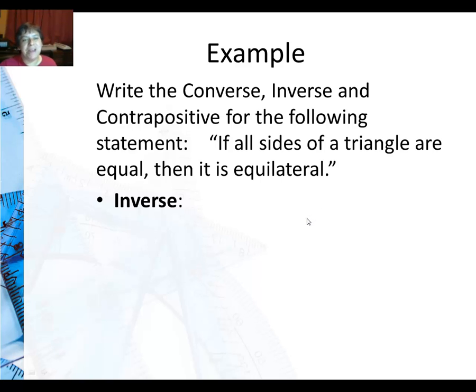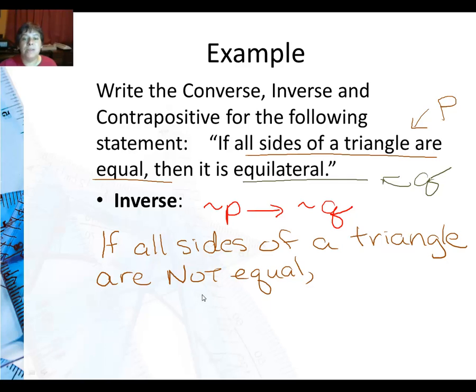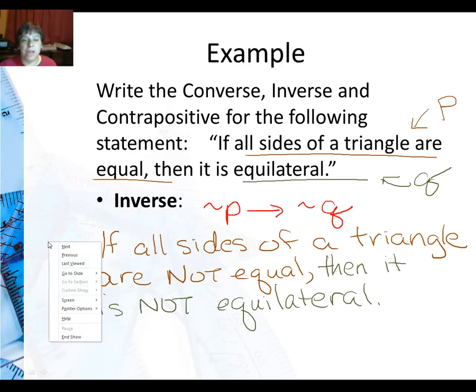Now we're going to write the inverse. Again still same P and the same Q. So for inverse P and Q keep the same order but I put in the word not. So I'm going to say if all sides of a triangle are not equal then it is not equilateral. So you can see that the only difference is this not here and that not there. Otherwise it looks very similar to the original statement.